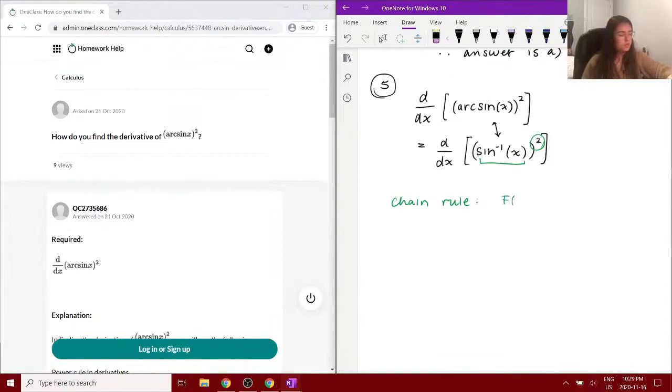If we have a function that is equal to f of g of x, essentially a function within another function, if you take the derivative of that, we get the derivative of the outer function times the derivative of the inner function. So this is the outer function here and this is the inner function. We take first the derivative of the outer function and multiply it by the derivative of the inner function.